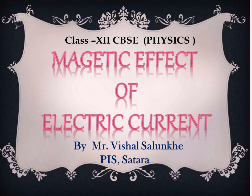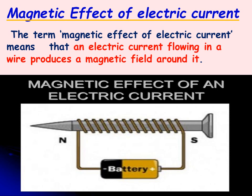Hi students, today we are going to start our second topic: magnetic effect of electric current, or moving charges and magnetism. The term magnetic effect of electric current means that an electric current flowing in a wire produces a magnetic field around it. If you pass a small amount of current through any conducting wire, it produces a magnetic field around it and shows some magnetic properties. This effect is called the magnetic effect of electric current.